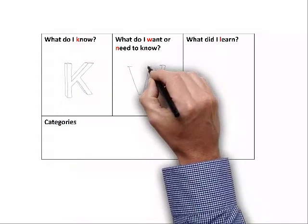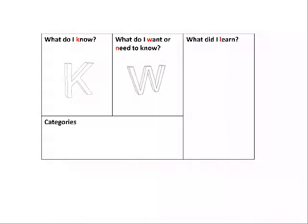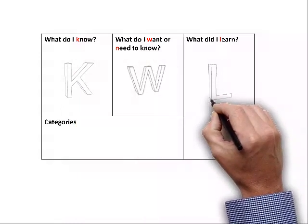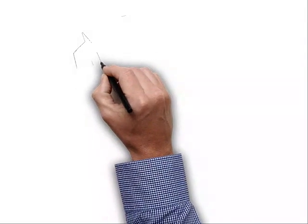In the next column, they put down what they want or need to know, and this becomes the W or N. Finally, after learning something new, they put down what they have learned, and that's the L.